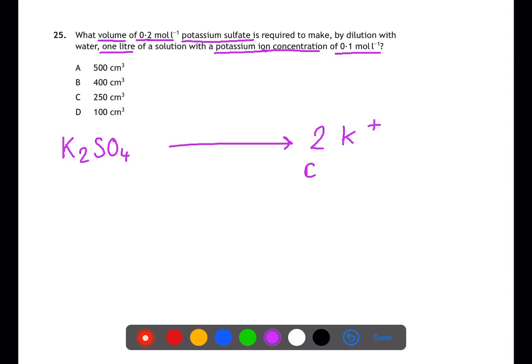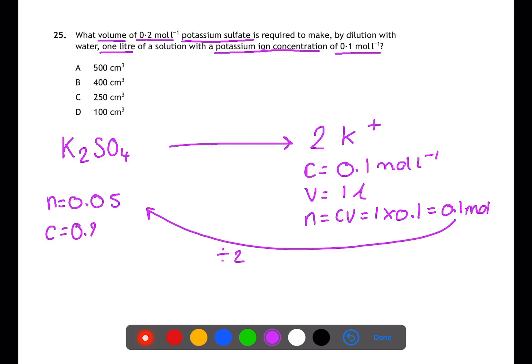If we have a potassium ion concentration of 0.1 mole per liter and a volume of 1 liter, then this means that we have 0.1 moles of potassium ions. If we're then to work out how many moles of potassium sulfate this equates to, we need to divide by 2. This means that our moles of potassium sulfate that are required is 0.05. The concentration that we're looking for is 0.2 moles per liter, and therefore the volume will be the moles divided by the concentration. This gives a volume of 0.25 liters. In the question, the volumes are given as centimeters cubed or milliliters, so we need to times this by 1,000 to get 250 centimeters cubed.